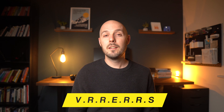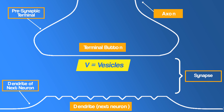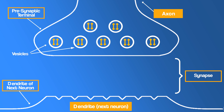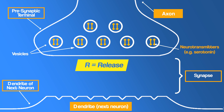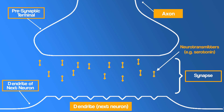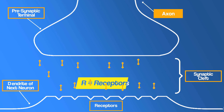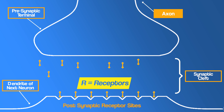To explain this process, try remembering V-R-R-E-R-R-S. V for vesicles: when the impulse reaches the end of the axon it arrives at the presynaptic terminal — 'pre' meaning before the synapse — which is made up of small structures called vesicles that contain neurotransmitters. R for release: the electrical impulse triggers the release of neurotransmitters, which diffuse across the synapse, known as the synaptic cleft. R for receptors: the neurotransmitters are received by receptors on the dendrites of the next neuron, specifically the post-synaptic receptor sites — 'post' meaning after the synapse.